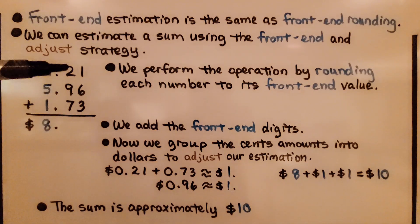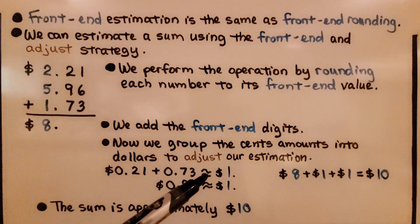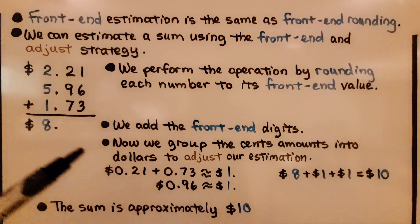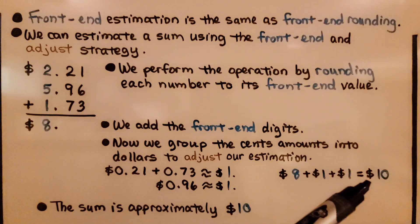We see we have a 21 and a 73. We can group them together to be approximately $1.00. And 96 cents is approximately $1.00. That means we have 8 plus 1 plus 1. It's $10.00. So the sum is approximately $10.00.